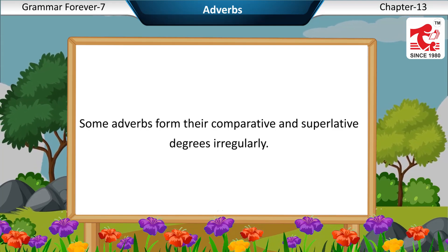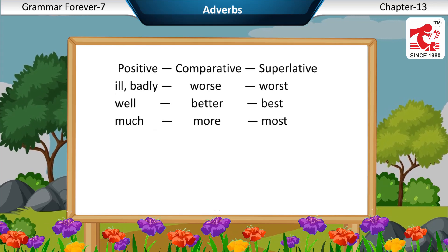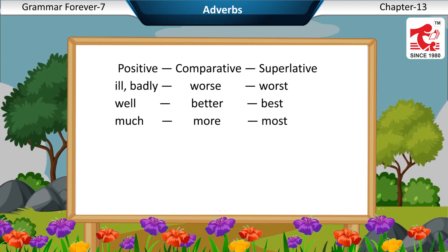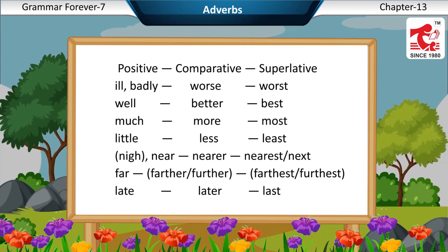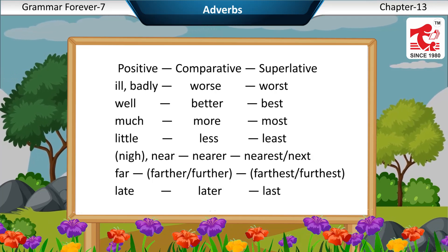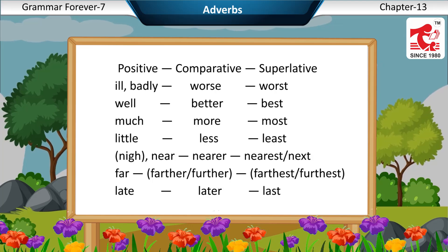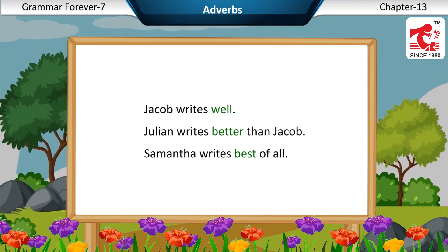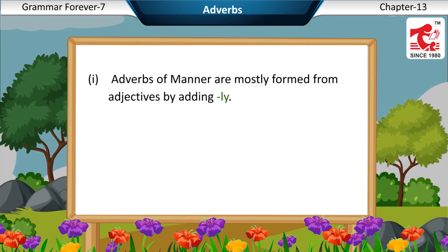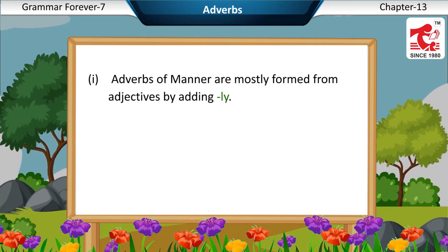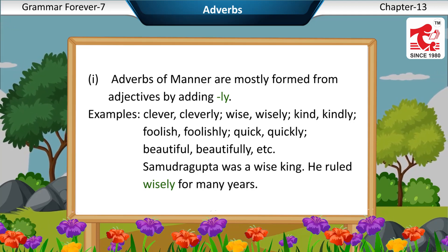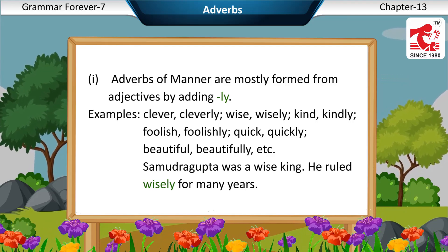Some adverbs form their comparative and superlative degrees irregularly. Examples: Ill/Badly — Worse — Worst; Well — Better — Best; Much — More — Most; Little — Less — Least; Far — Further — Farthest; Late — Later — Last. Formation of adverbs: Most adverbs of manner are formed by adding -LY to the adjective. Examples: foolish — foolishly; quick — quickly; beautiful — beautifully, etc.